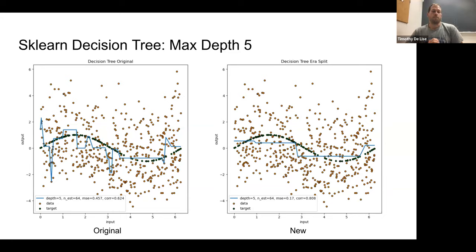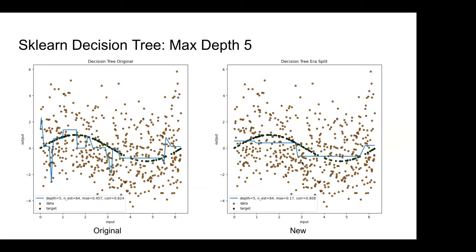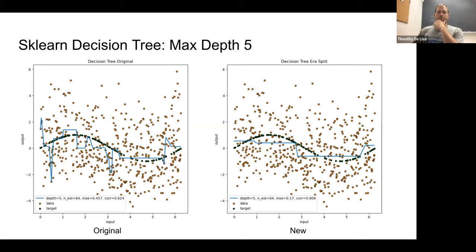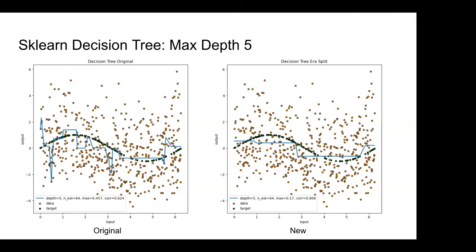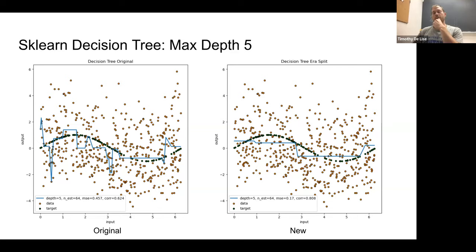Confirming it is out-of-sample: each new prediction has different random noise and a different shift that wasn't in the training data. The model was trained on a number of eras and then predictions were made on held-out test eras. So yes, this is an out-of-sample evaluation.